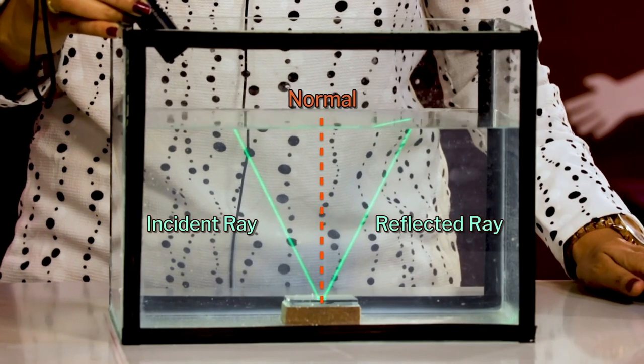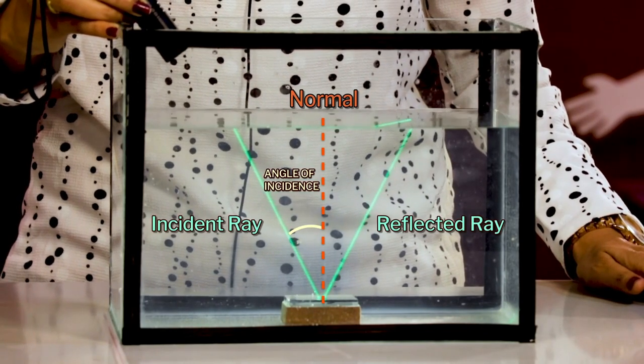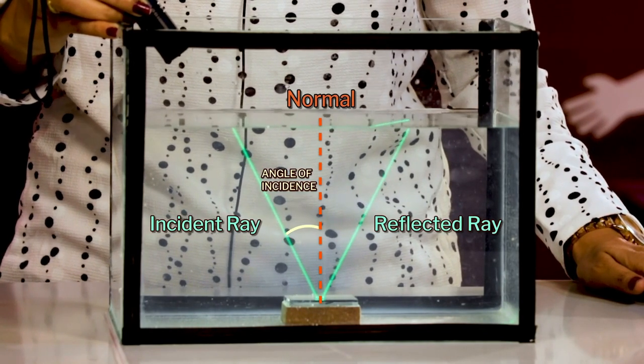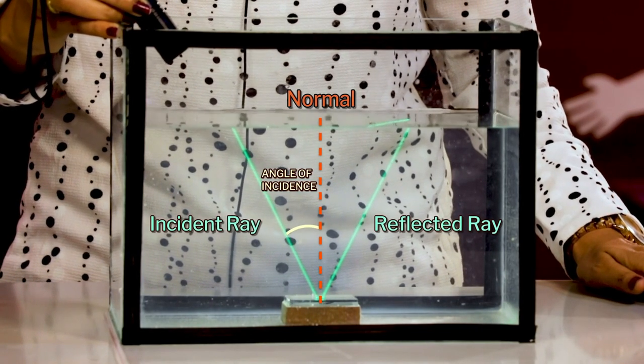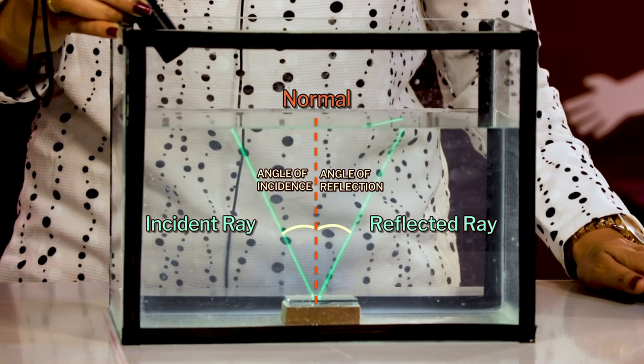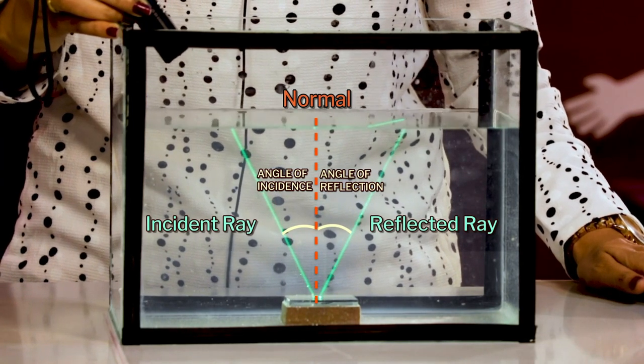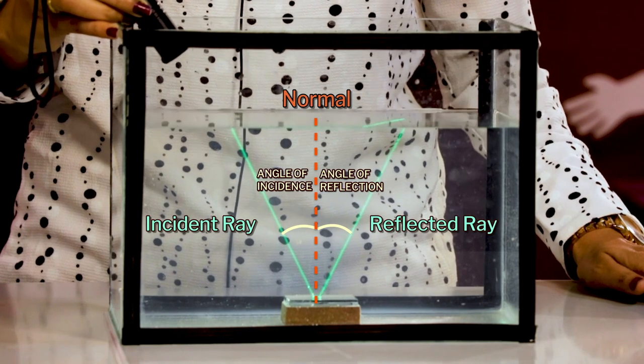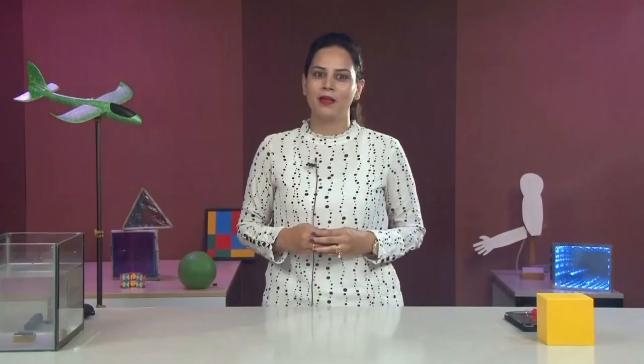The angle formed between the incident ray and the normal is the angle of incidence, and the angle formed between the reflected ray and the normal is called the angle of reflection. I also observed that the phenomenon of reflection happens in the same way in both air and liquid medium.